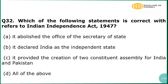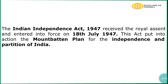Question number 32: Which of the following statements is correct which refers to the India Independence Act 1947? The correct answer is option number D, all of the above — it abolished the office of the Secretary of State, it declared India as an independent state, and it provided for the creation of two constituent assemblies for India and Pakistan. In explanation, the Indian Independence Act 1947 received royal assent and entered into force on 18 July 1947. This act put into action the Mountbatten plan for the independence and partition of India.